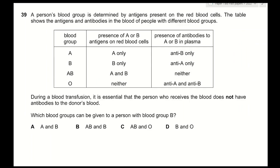Question 39: blood group B has antibodies to A. During a transfusion, the recipient must not have antibodies to the donor's blood. Since a person with blood group B has anti-A antibodies, they cannot receive blood containing A antigens. Therefore, blood groups A and AB are excluded. The compatible blood groups are B and O. The answer is D.